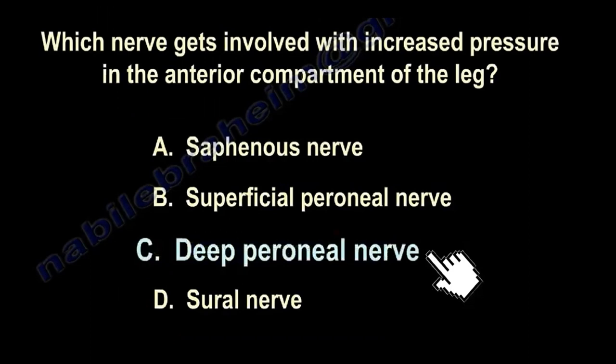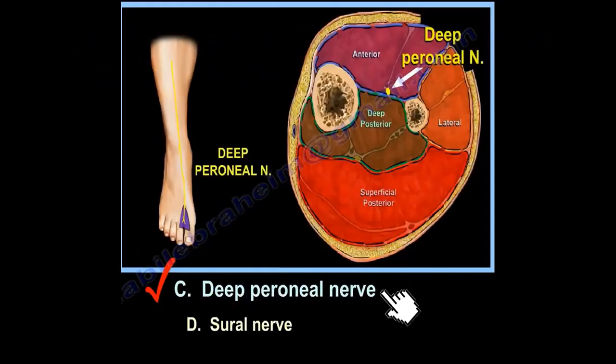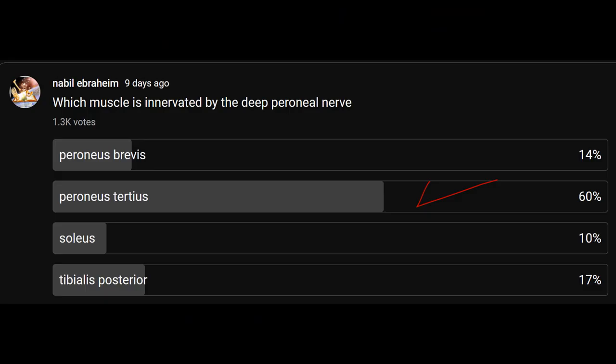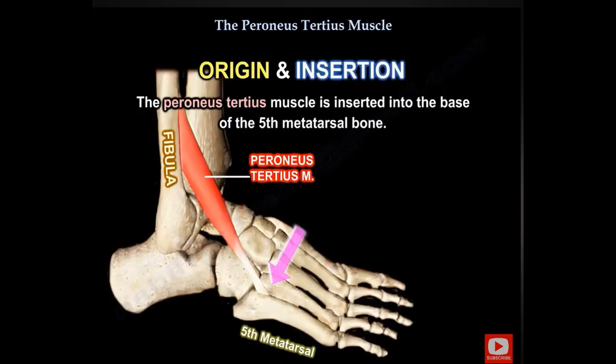Which nerve gets involved with increased pressure in the anterior compartment of the leg? It is the deep peroneal nerve. Which muscle is innervated by the deep peroneal nerve? Peroneus tertius — and you can see the origin and insertion of the muscle.